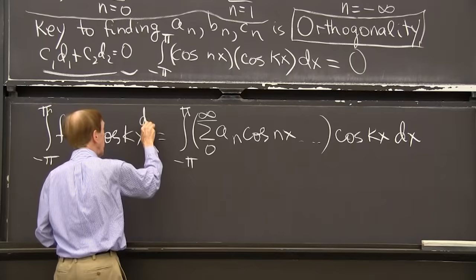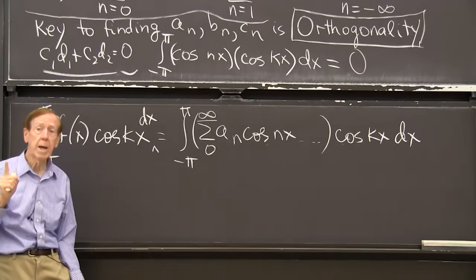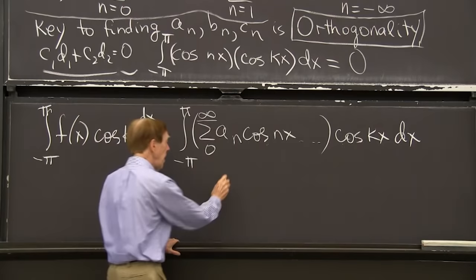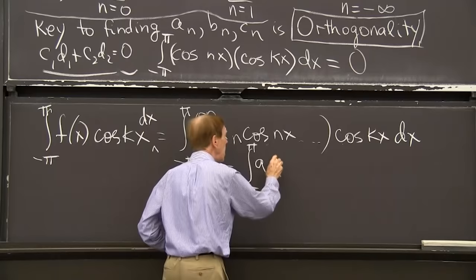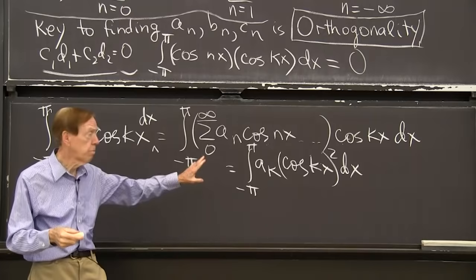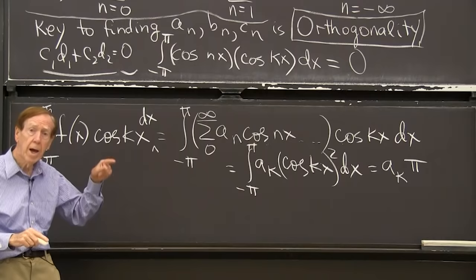And now the orthogonality pays off. Because this times this, when I integrate, gives 0 with one exception. When n equals k, then I do get the integral. The only term I get is a_k cosine kx twice dx. Only k equal n survives this process. And then that integral of cosine squared happens to be pi. So this is just a_k times pi. Look. I have discovered what a_k is.